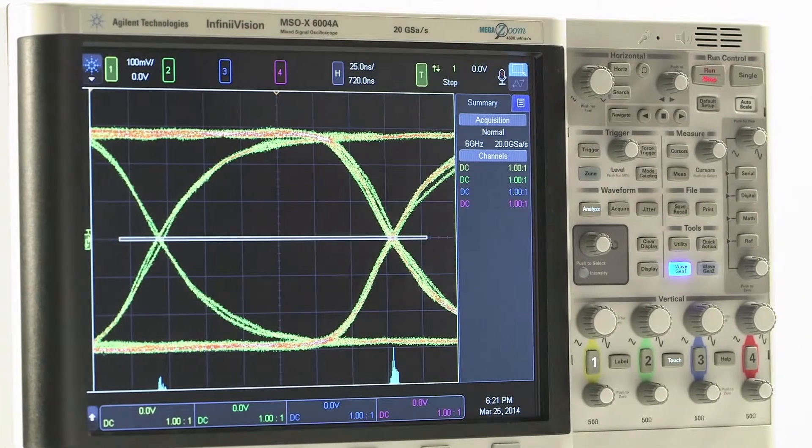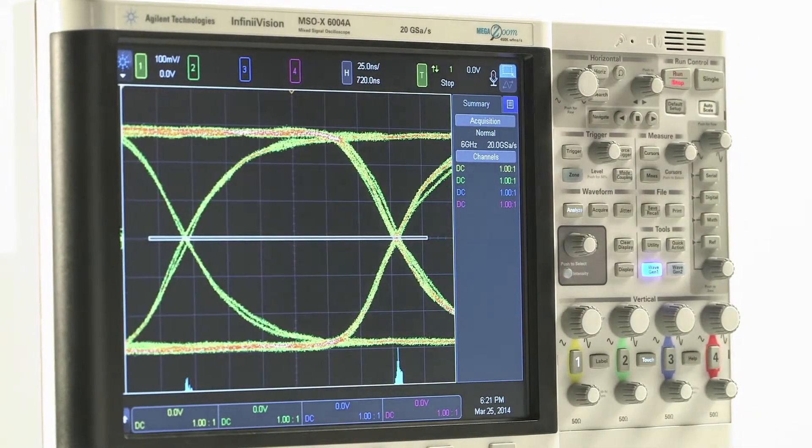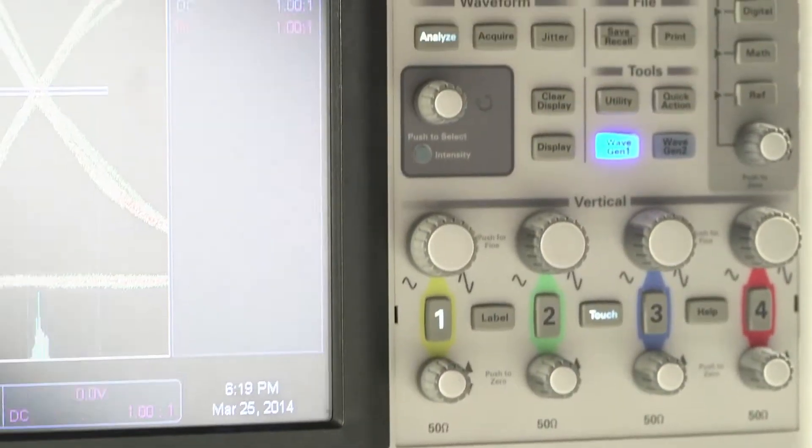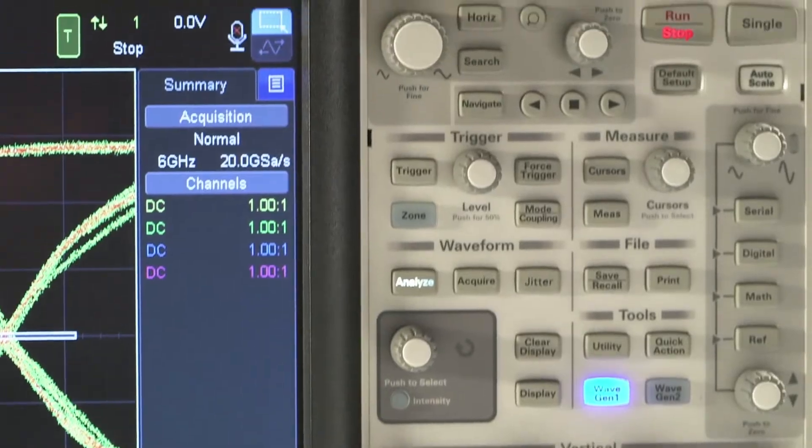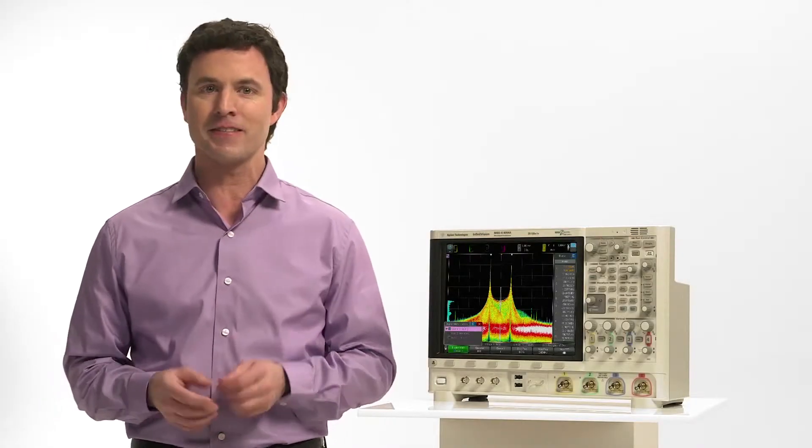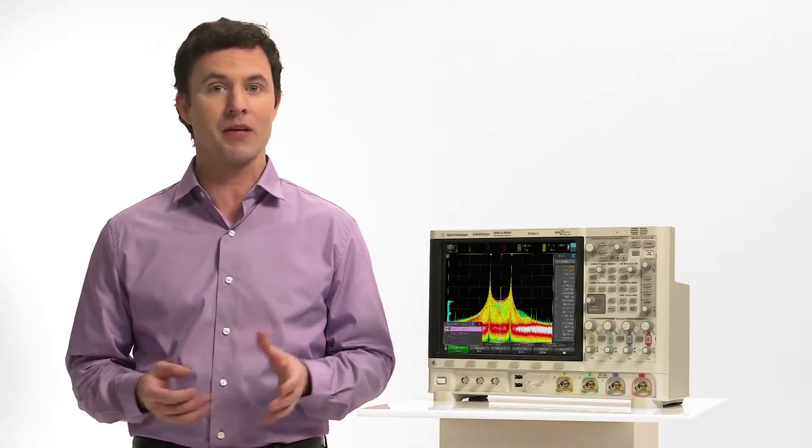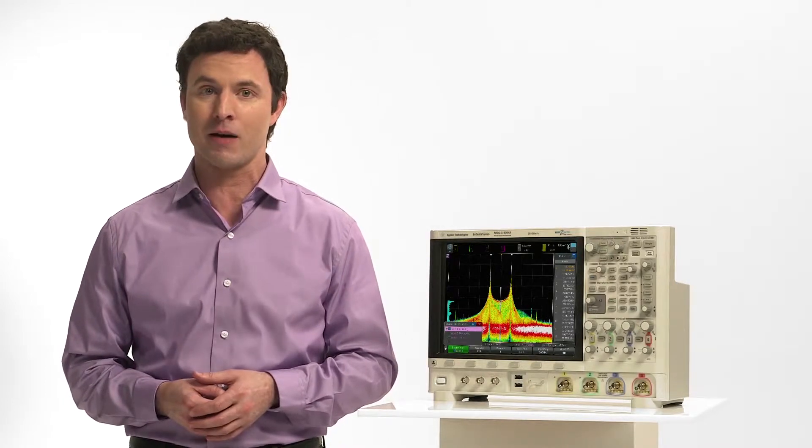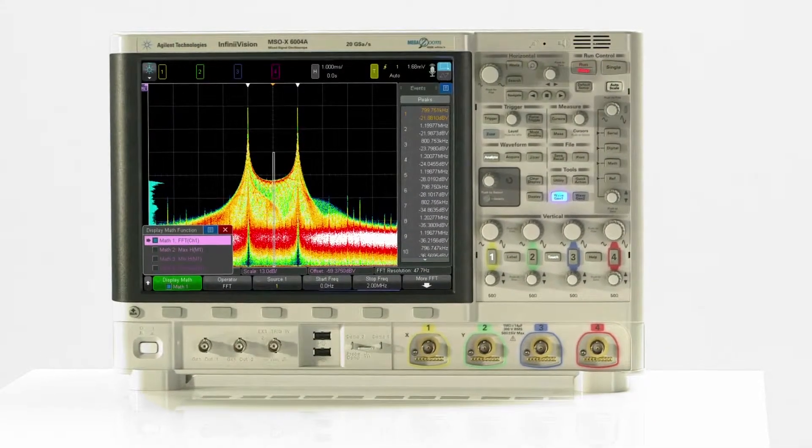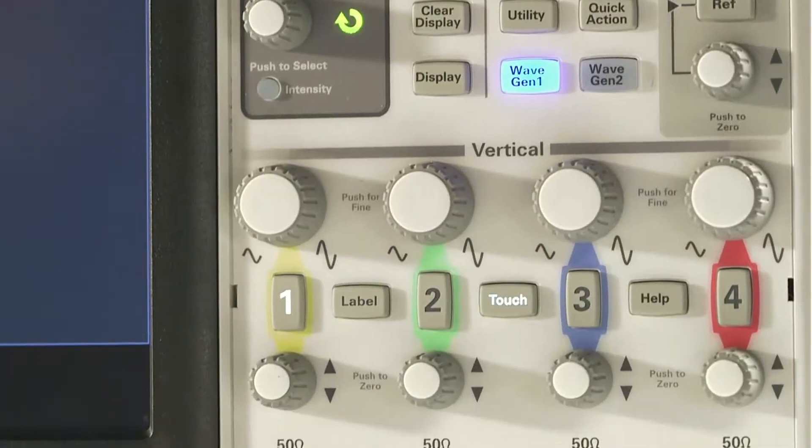With the new InfiniVision 6000X-Series oscilloscope, you'll get the world's best price performance for bandwidths up to 6 GHz. The 6000X-Series is, in fact, the first scope in its class with up to 6 GHz bandwidth and 20 gigasamples per second at less than half the cost of competing scopes.